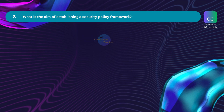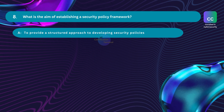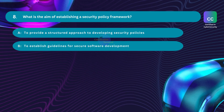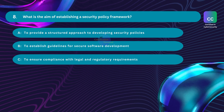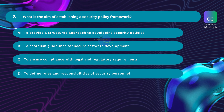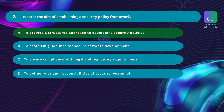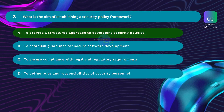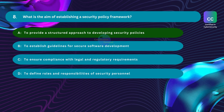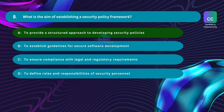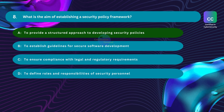Question number eight: What is the aim of establishing a security policy framework? Option A: to provide a structured approach to developing security policies. Option B: to establish guidelines for secure software development. Option C: to ensure compliance with legal and regulatory requirements. Option D: to define roles and responsibilities of security personnel. The correct answer is Option A. By establishing a structured security policy framework, organizations create a comprehensive, consistent, and adaptable approach to security management, enhancing security posture and fostering a culture of security awareness and compliance.